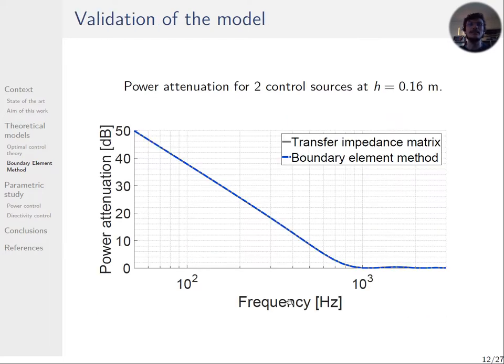In this first figure, it shows the power attenuation when there are two control sources. The calculation is made with both methods presented above, and for each case the power attenuation is the same, efficient in low frequency until a limit at KH equal Nπ, where the attenuation is null, H being the distance between the primary and a control source. The smaller the distance, the more the attenuation is efficient in higher frequency.